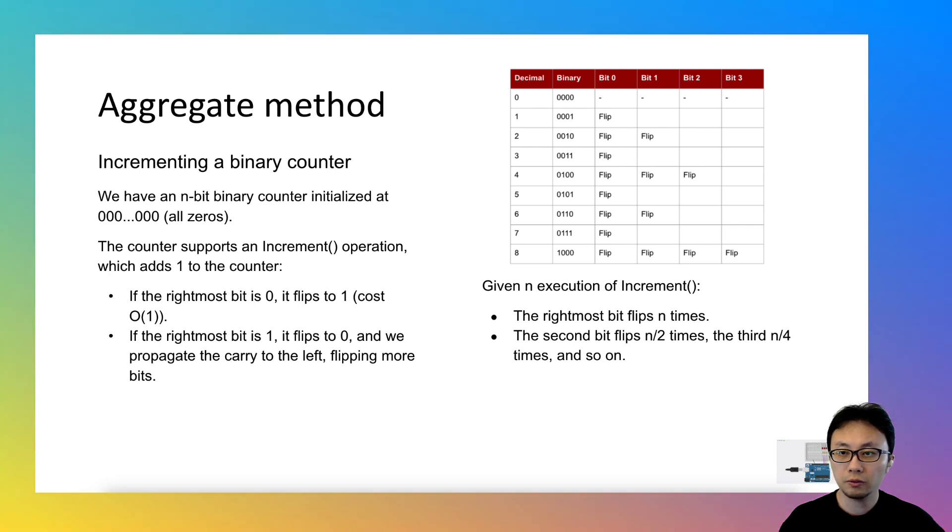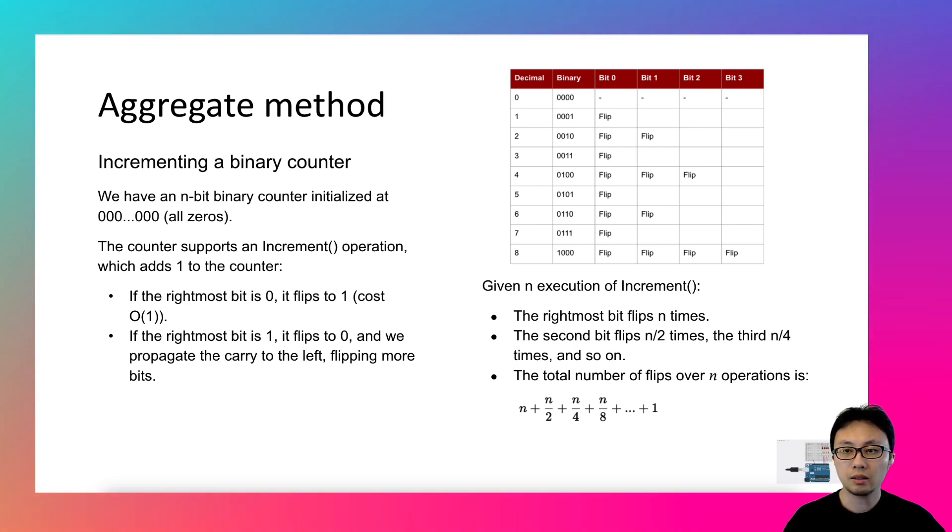the rightmost bit flips for n time, and the second bit flips for n divided by 2 times, and the third n divided by 4 times, and so on. So the total number of flips over n operations is the sum of n plus n divided by 2 plus n divided by 4 plus n divided by 8,